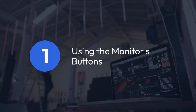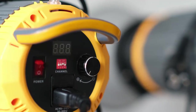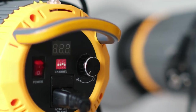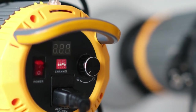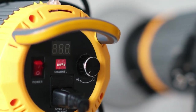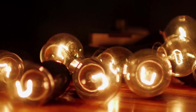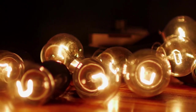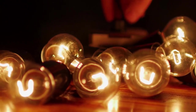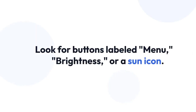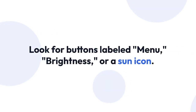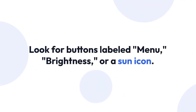Using the monitor's buttons. Most AOC monitors have physical buttons on the front or side bezel. These buttons usually control various settings, including brightness. Look for buttons labeled Menu, Brightness, or a sun icon.